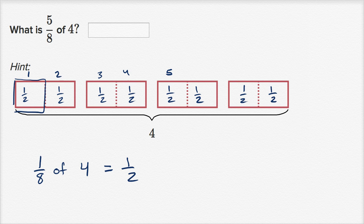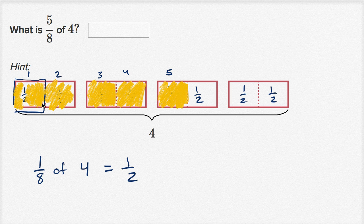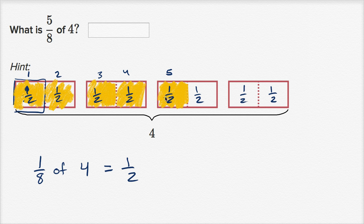Let me shade this in. One-eighth of four is one-half. Two-eighths is two-halves. Three-eighths is three-halves. Four-eighths is four-halves. And five-eighths is five-halves. So I took the whole four, divided into eight equal sections, and shaded in five of them — one, two, three, four, five. Each of those is a half, so altogether I have five-halves shaded in. Five-eighths of four is five-halves.